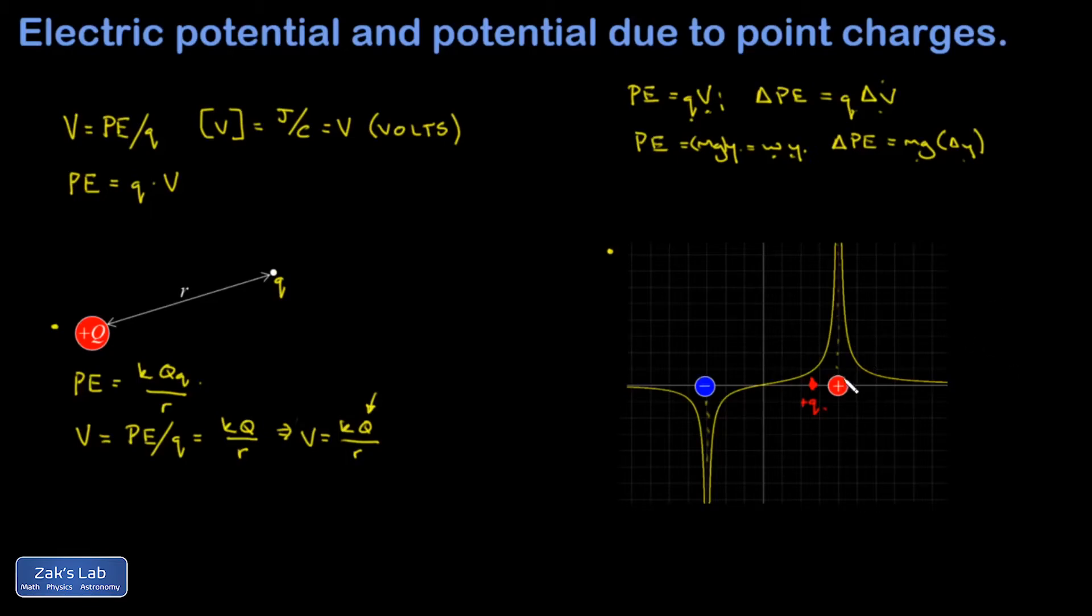So one thing you have to be careful about in this picture is that I have all these charges situated in a one-dimensional world. They're all along the x-axis here. So the charge is not literally rolling down the hill in a two-dimensional sense. But it moves from the high-potential regions to the low-potential regions.